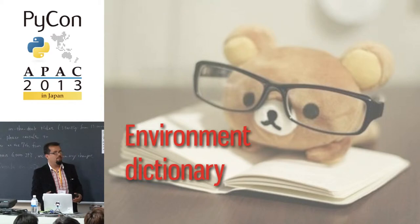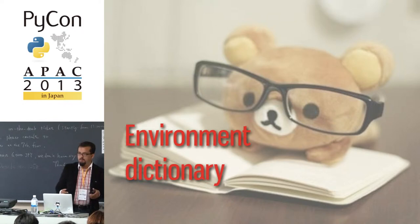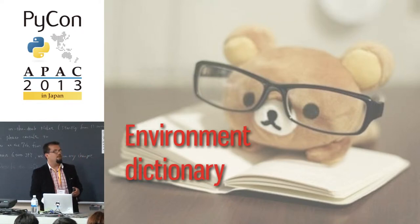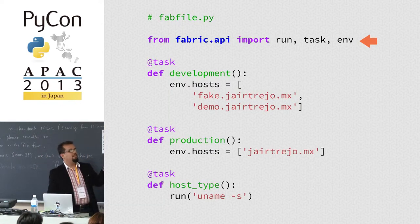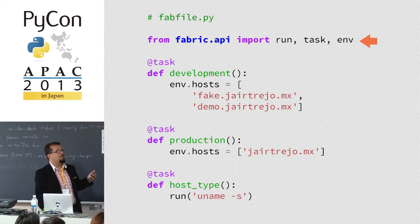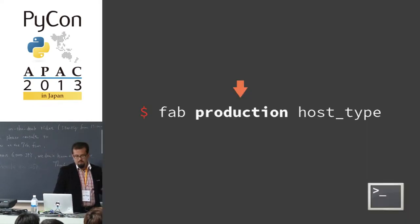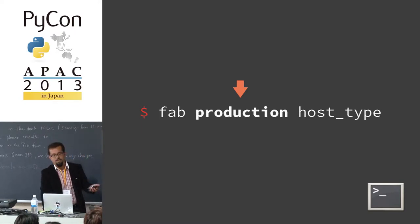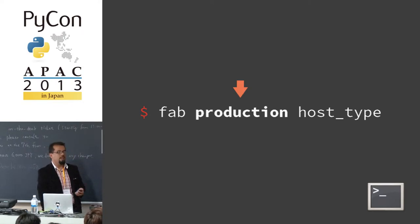Sometimes configuration is more involved. You need different users or things are located differently on different servers. We have the environment dictionary where you can store task configuration information and share state between tasks. You can write tasks that only do configuration: the development task configures the environment to use development servers, and the production task configures the environment to use a production server. If you run regular tasks after configuration tasks, they run on the environment configured by the first task.